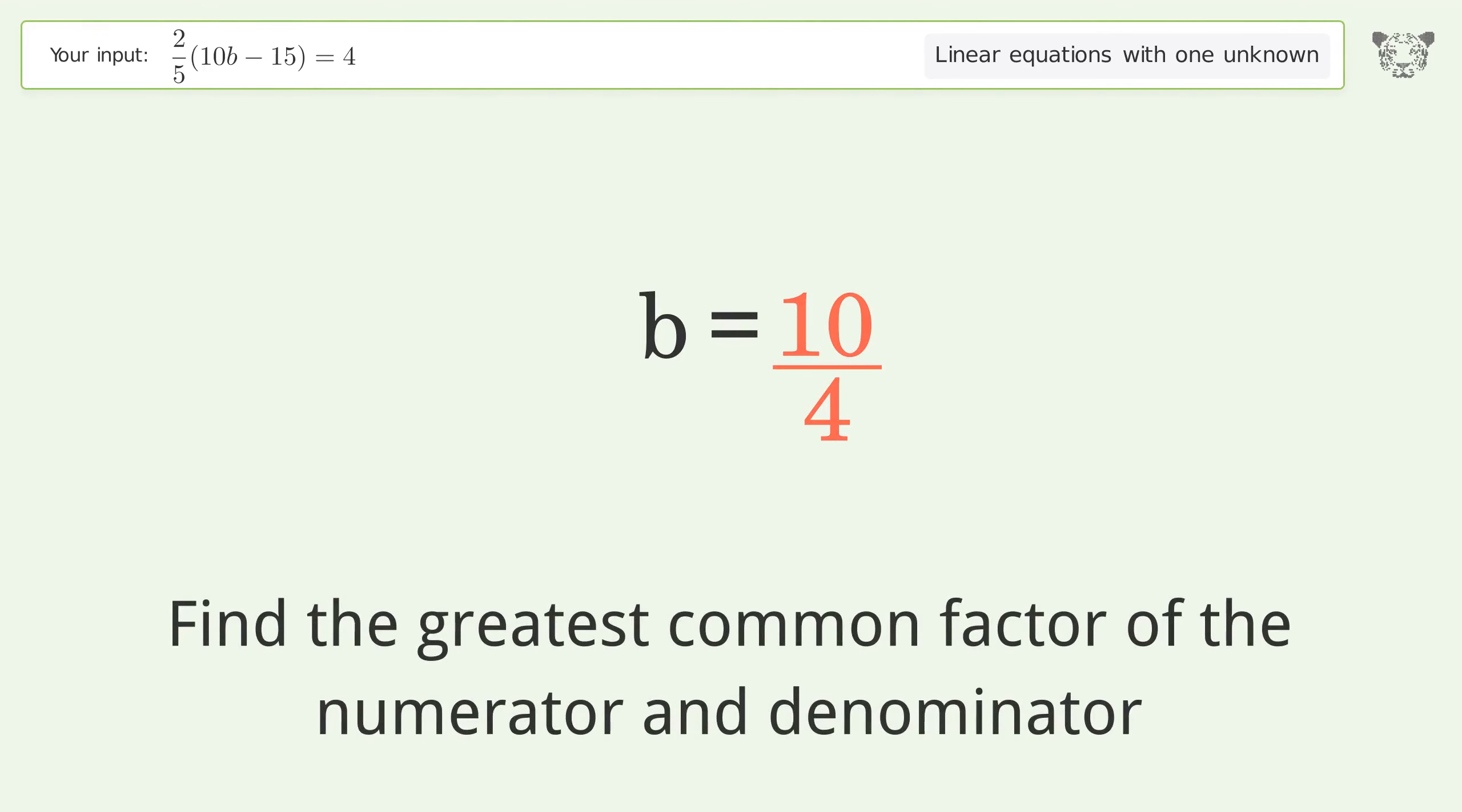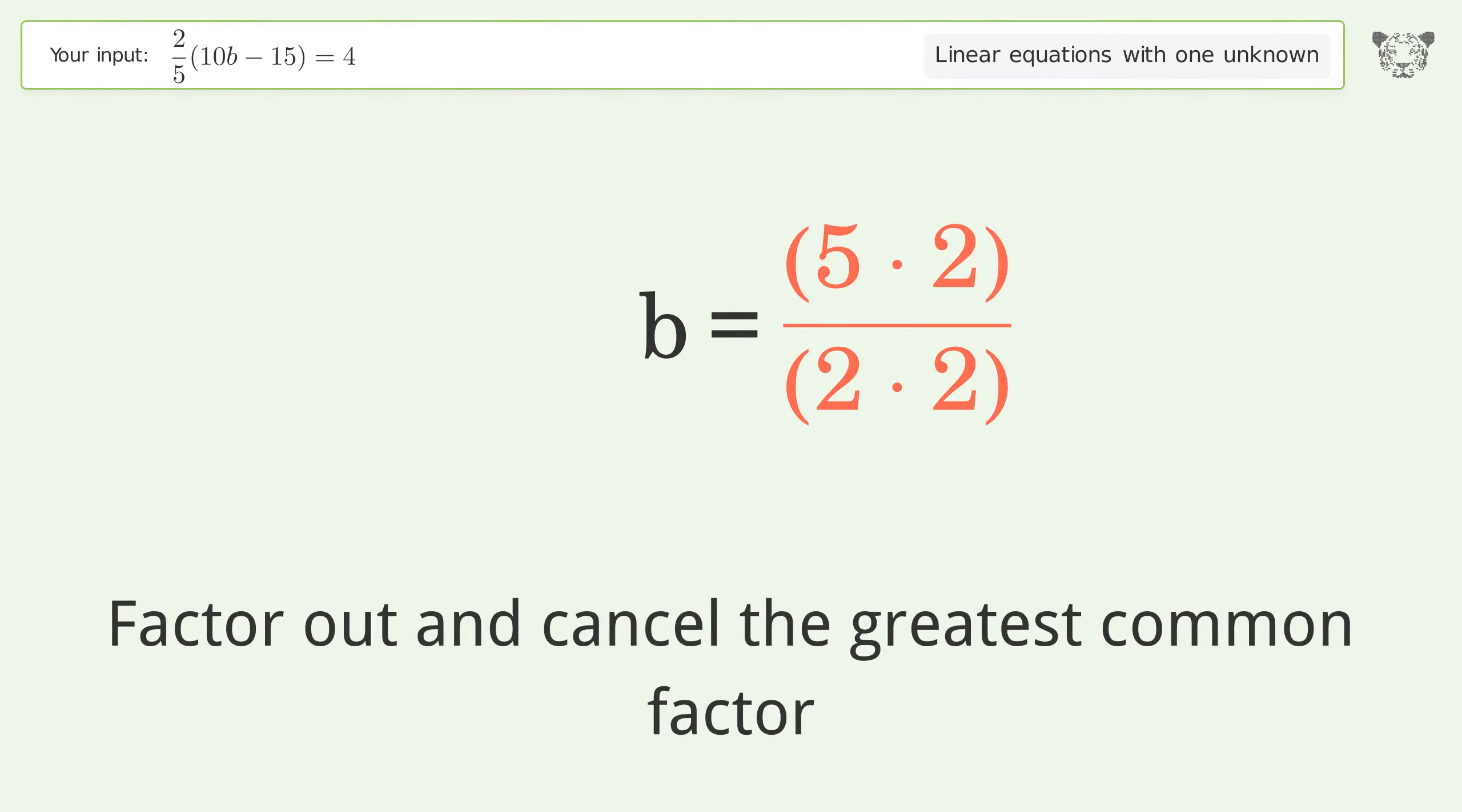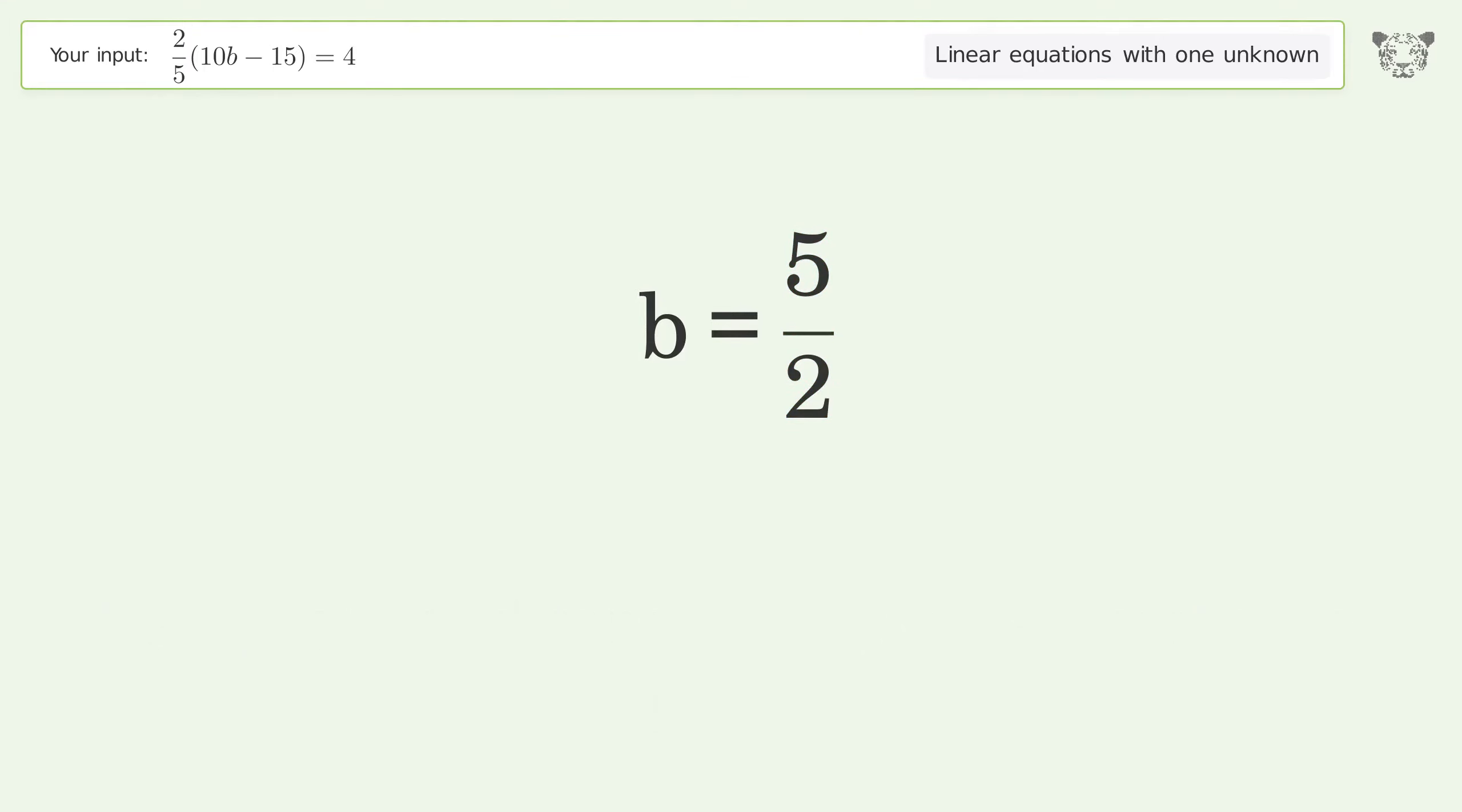Find the greatest common factor of the numerator and denominator. Factor out and cancel the greatest common factor. So the final result is b equals 5 over 2.